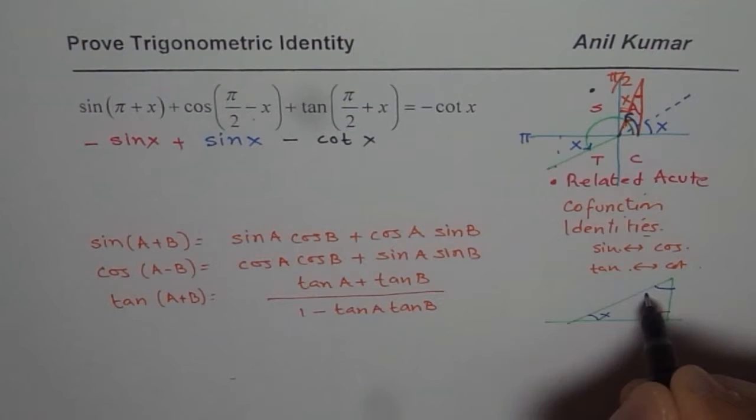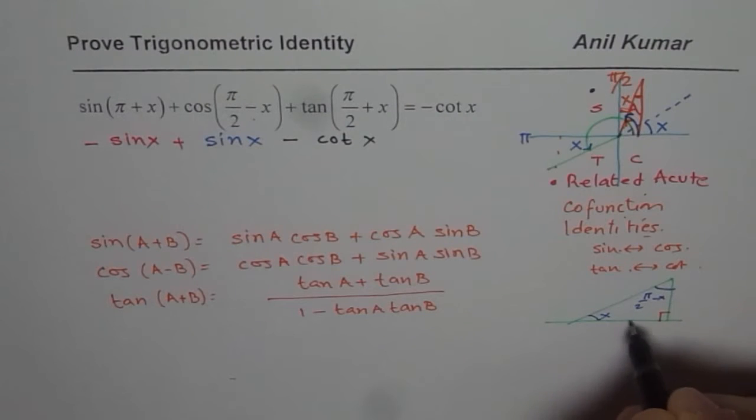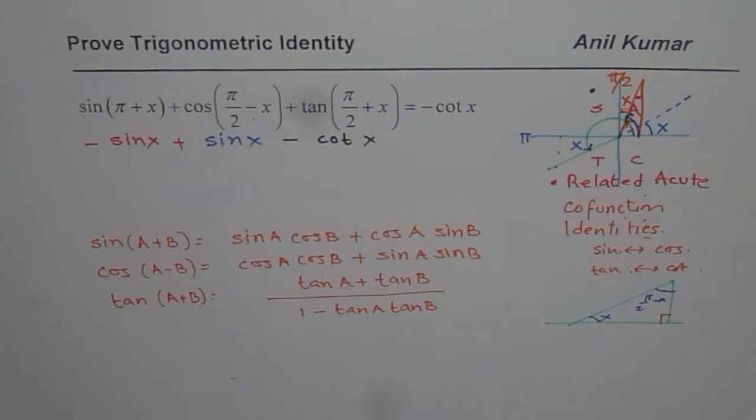But as soon as I say pi by 2 minus x, we are looking from the other side. So, sin changes to cos, cos to sin, tan to cotangent. Because the side from where we are looking changes. Do you get the idea?